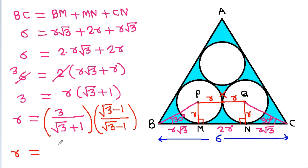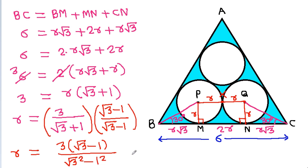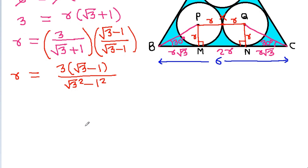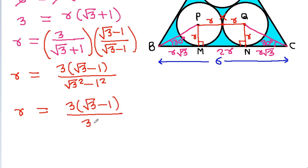R equals 3(√3 − 1) divided by (√3 + 1)(√3 − 1). Using the identity (A + B)(A − B) = A² − B², we get R equals 3(√3 − 1) over (3 − 1), so R equals (3/2)(√3 − 1).